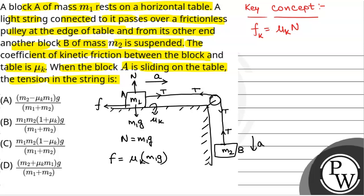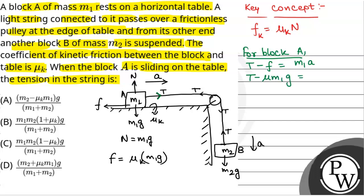For block A, the tension is the driving force. So: tension minus frictional force equals M1 into acceleration. That gives us T minus mu k·M1·g equals M1·A. Let us call this Equation 1.